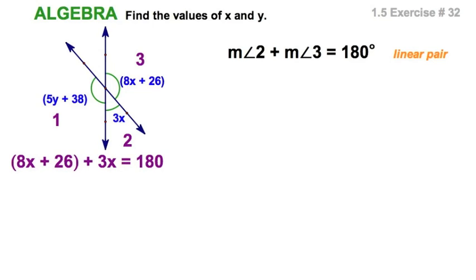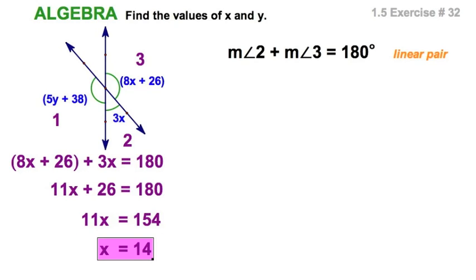So I can set those up together. We'll just go through the arithmetic really quickly. We're going to combine terms and subtract the 26. Divide by 11. And there you go.